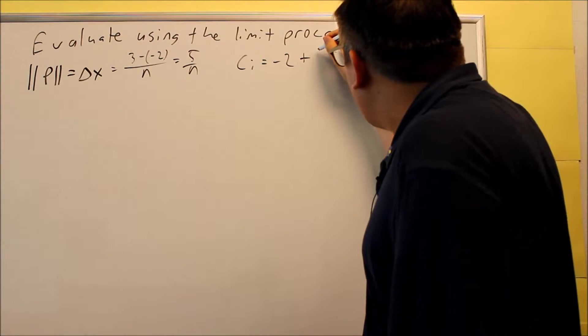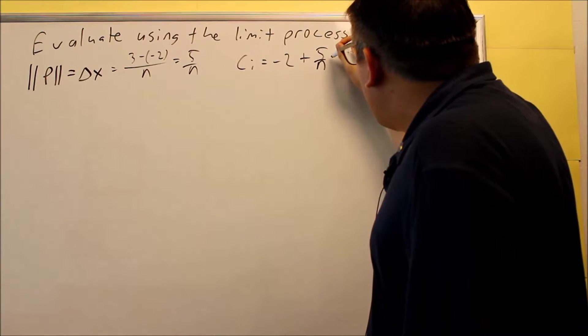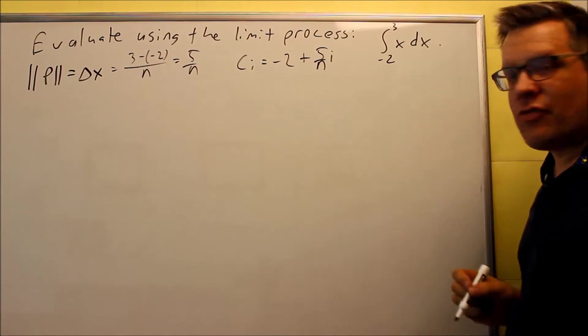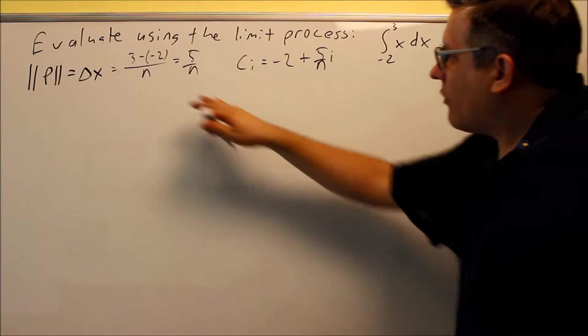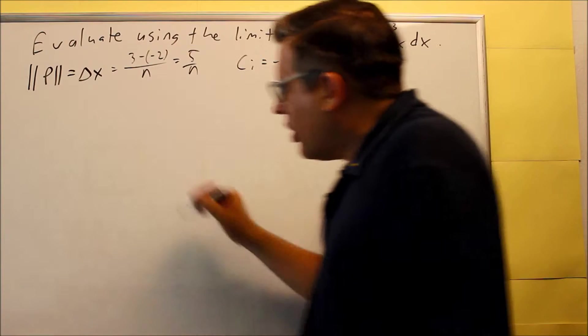So, delta x is your 5 over n, and then we're multiplying this by i. So, you get negative 2 plus 5 i over n. That's your ci. So, now that we have this piece of information, we're ready to set up the limit.